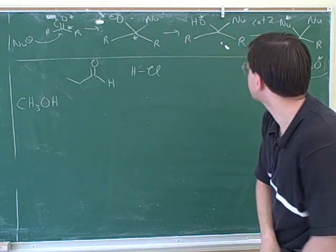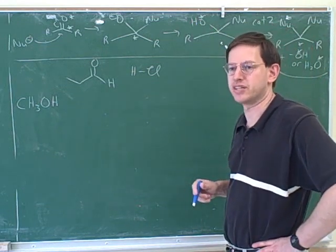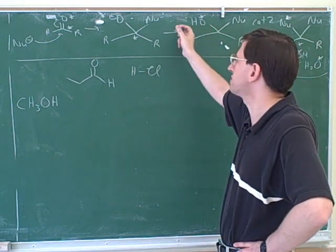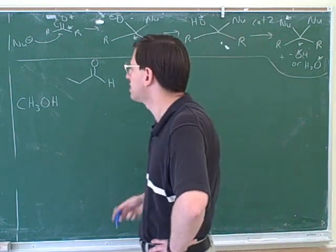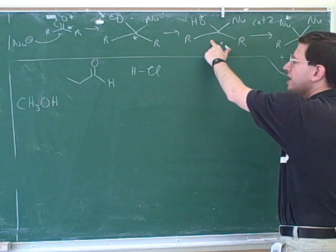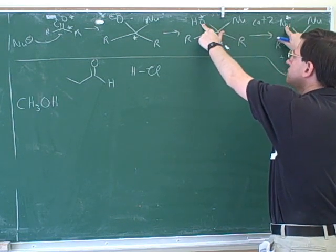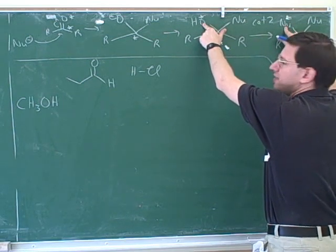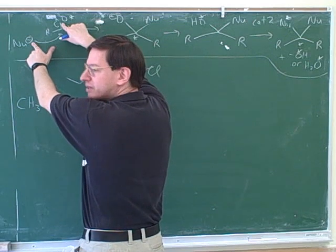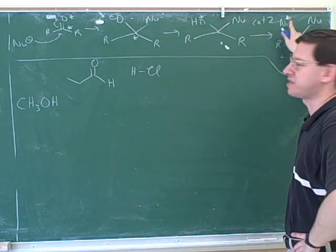Now we have two more changes that have to happen. One thing is this oxygen has to leave, and the other thing is this second nucleophile has to join. It turns out these two things happen separately: first, this oxygen is going to leave, and then the second alcohol is going to attack. So the overall approach is: the first alcohol attacks and simultaneously breaks the pi bond, then the carbonyl oxygen leaves, then it gets replaced by the second alcohol.